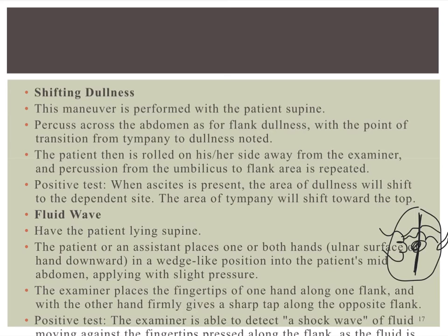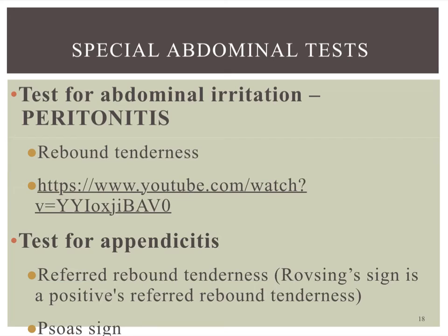There are a couple of special tests for the abdomen. We discussed shifting dullness and fluid wave for ascites. If the patient has abdominal irritation like peritonitis, you can do a rebound tenderness test: push down at a 90-degree angle slowly and deeply into the abdomen, then quickly release. If they have pain on release, that's a positive rebound tenderness. For appendicitis, referred rebound tenderness involves pushing down in the left lower quadrant, and they will feel pain in the right lower quadrant.